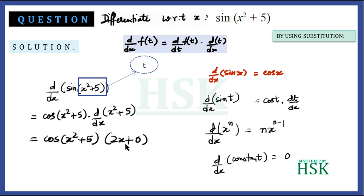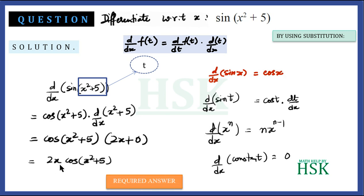So d/dx of x² equals 2·x^(2−1), which is simply 2x. Therefore the final answer is 2x · cos(x² + 5).